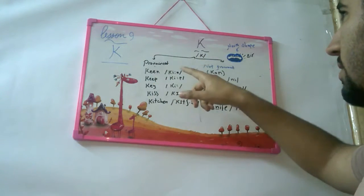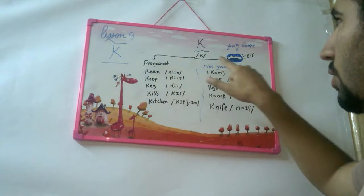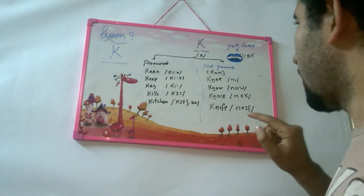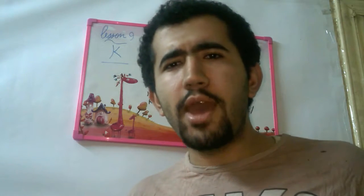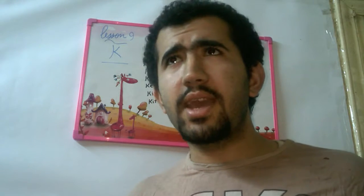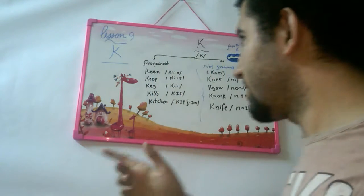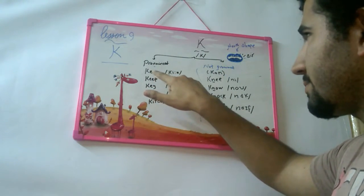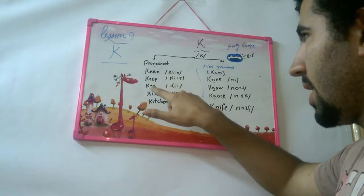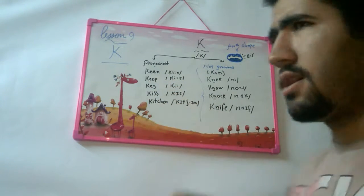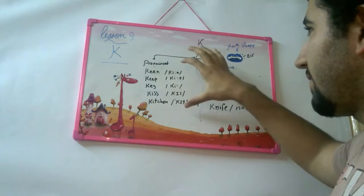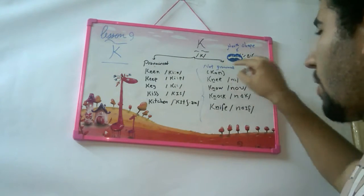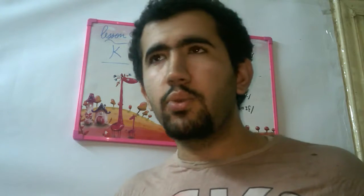The letter K can be pronounced or not pronounced. When it's pronounced, you can hear it. For example: keen, keep, key, kiss, kitchen — can you hear the K? Yes! So it's pronounced. Here are the phonetics for when it is pronounced.